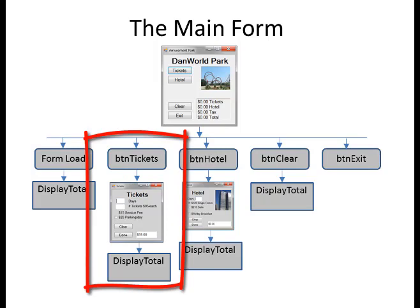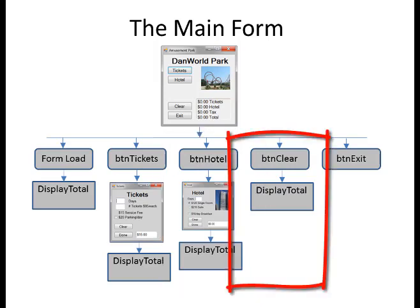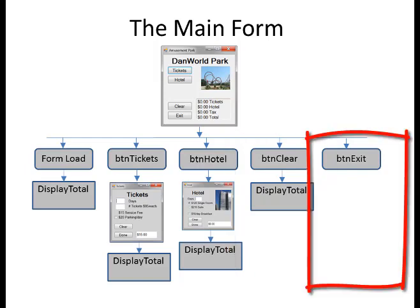The tickets form will figure out the number of days, tickets sold, and whether to pay for parking, compute the answer, and store it in the module. When this form closes, we return to the main form which updates the subtotals, tax, and total. Similarly, the hotel button activates the hotel form where people enter the number of days and choose breakfast. The hotel price is computed and stored as a subtotal in the module. Button clear clears all the totals and calls display total again. Button exit closes the program.